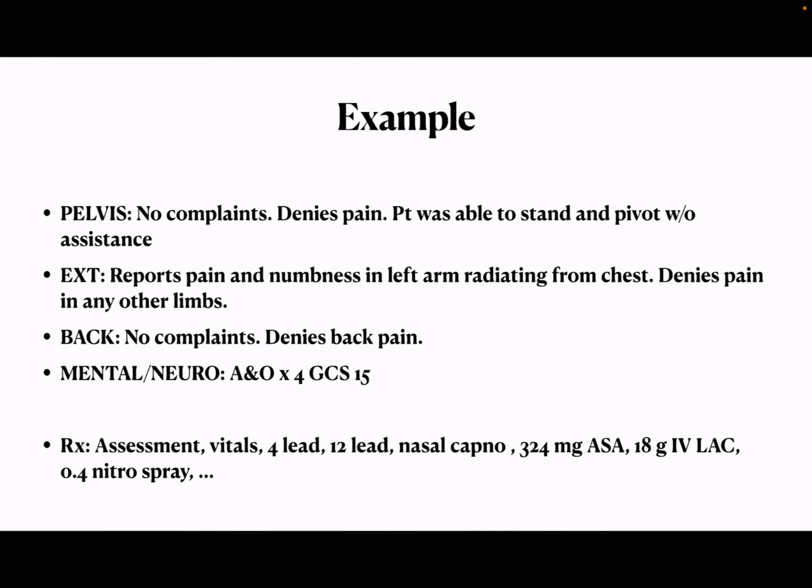Mental/neuro — standard baseline: alert and oriented times four, GCS of 15. A thing to remember: if it does not say alert and oriented times four, GCS of 15, there needs to be a qualifier — such as 'mentation reported as normal by family or by staff,' or 'medical record shows history of dementia.' Also, on medical calls where you sedated somebody, if I created a situation where the patient isn't GCS 15, document that — 'patient GCS was reduced by sedation.' Just plain talk — qualify the statement of why their GCS wasn't 15.